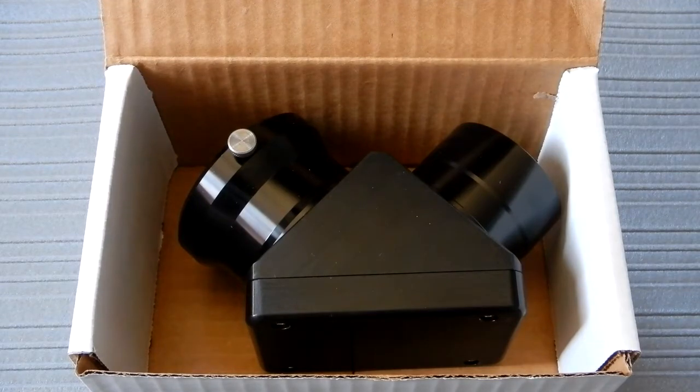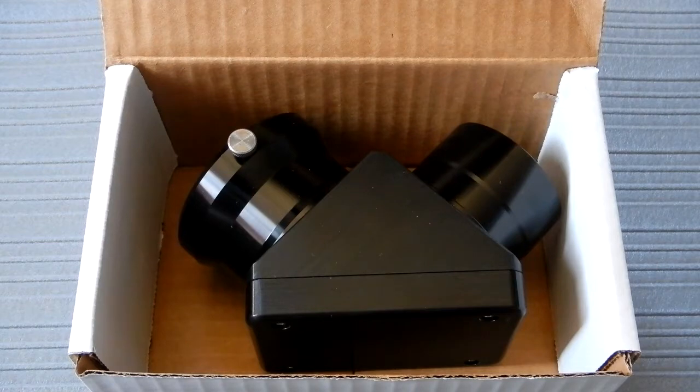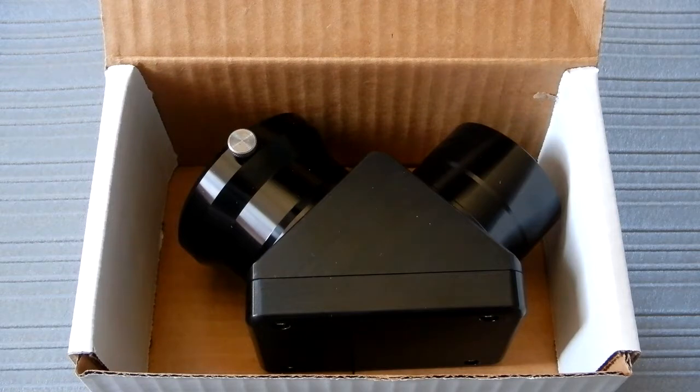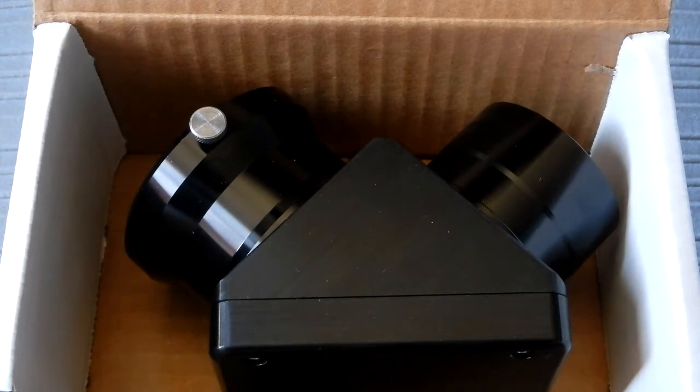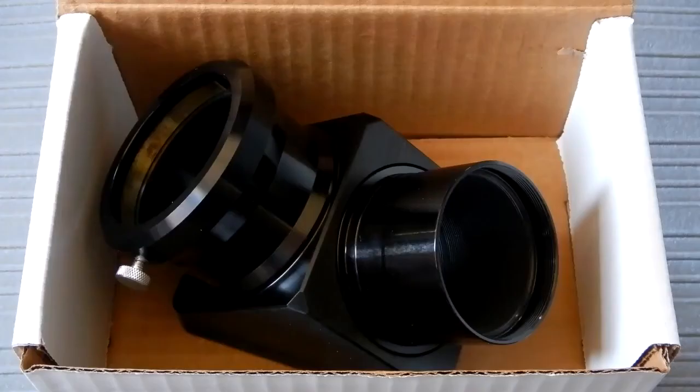Today I want to take a look at something I've been wanting to get for a long time and have procrastinated on: the Astrophysics Max Bright two-inch mirror diagonal with dielectric coatings and a brass locking ring. This is their model PMD MAX, and currently it goes for $350.